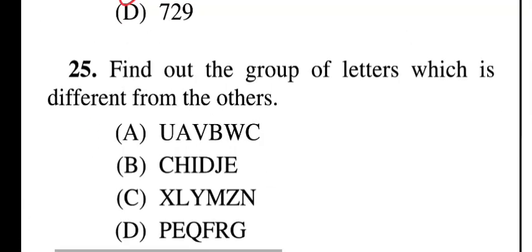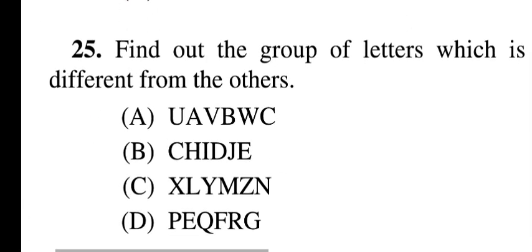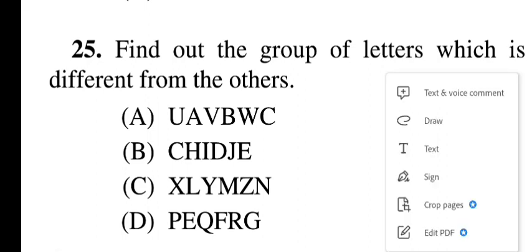Question twenty-five: find the group of letters which is different from the others — UMBB, WCCH, IDJ, EXL, YMZ, NPE, QFR, G. Question twenty-five, option B is correct: CHID or JE.